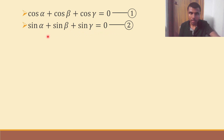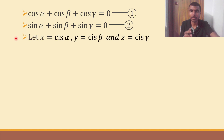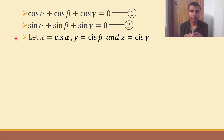Now, the first important step in this entire sum is: let x equal to cis α, y equal to cis β, and z equal to cis γ. This is the first important step. Now, to understand how things go, to make use of the given two conditions, I'm going to find out x plus y plus z.